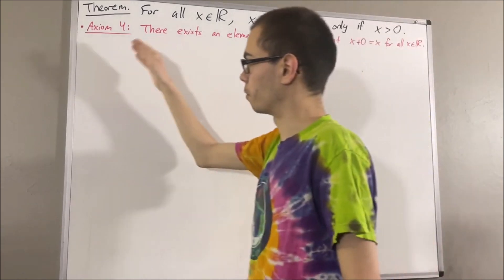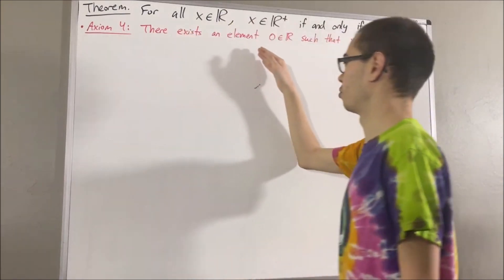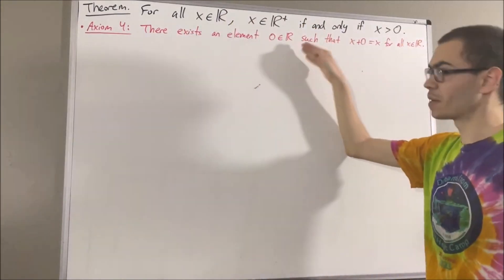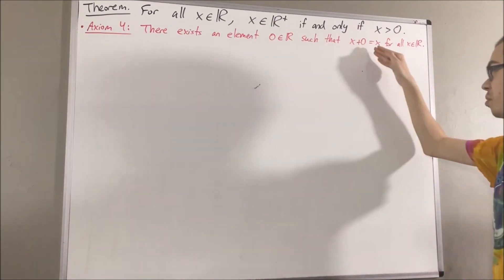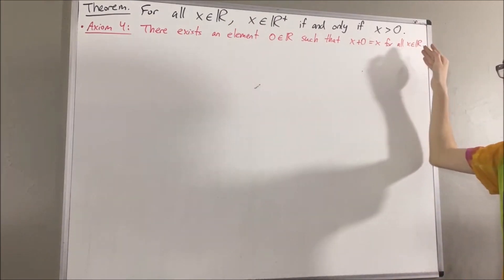We have axiom 4, which tells us that there exists a real number, which we call 0, that has the property that x plus 0 is equal to x, for all real numbers x.